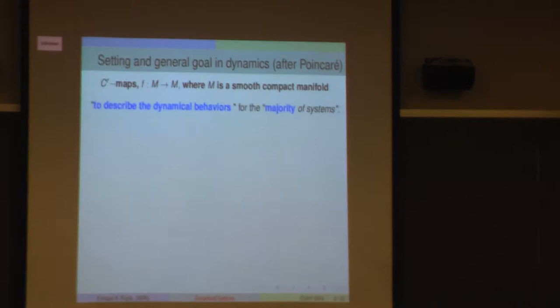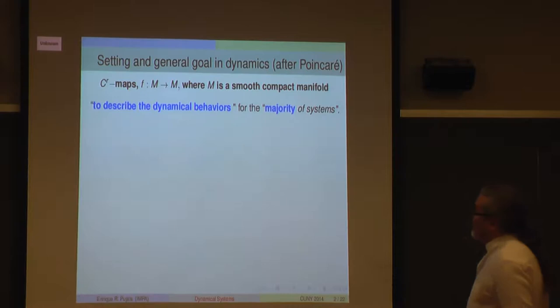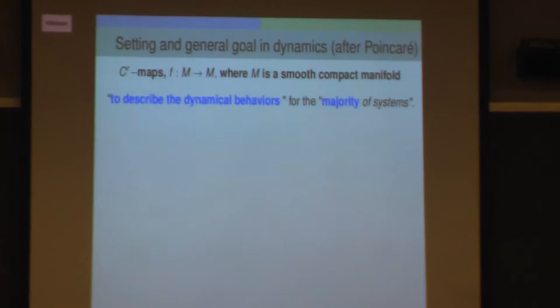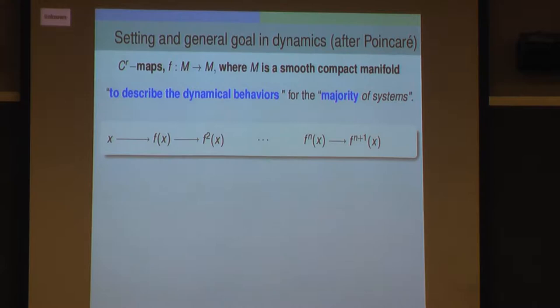This is common ground for people working in dynamics. One goal in dynamics after Poincaré is to try to describe the dynamical behavior of the majority of systems. And of course this is truly vague—it's an ambiguous sentence. You have to specify what it means to describe, what is the dynamical behavior, and what is the majority. So this colloquium is trying to say something more specific about that sentence.